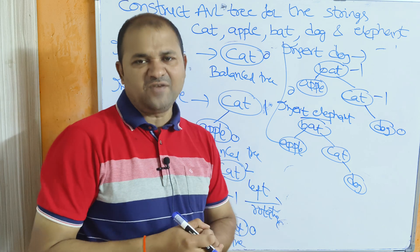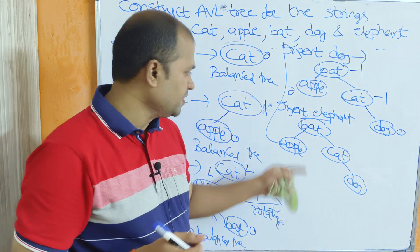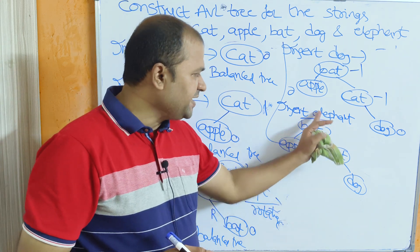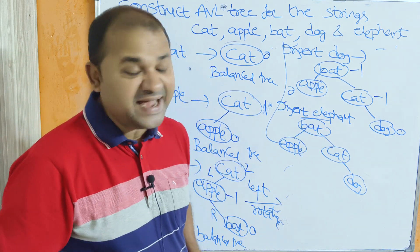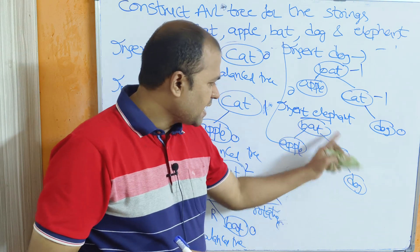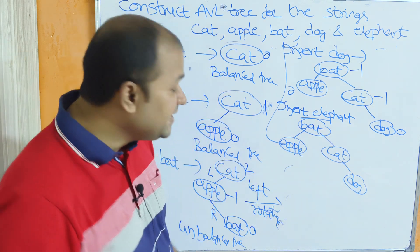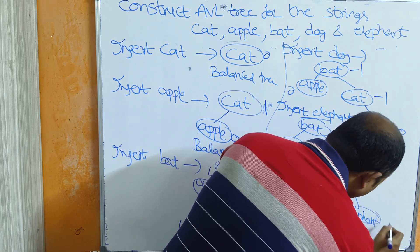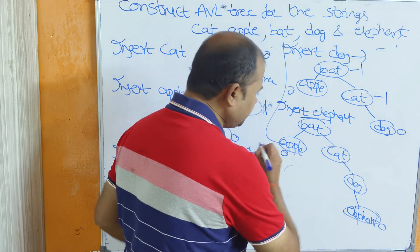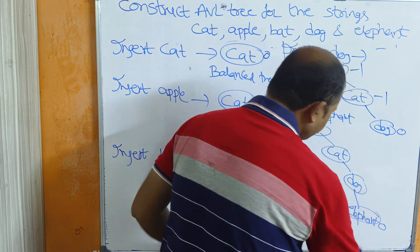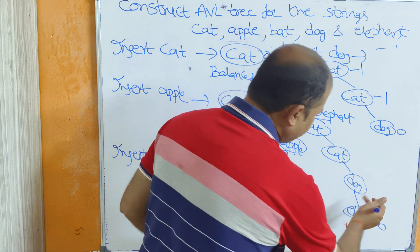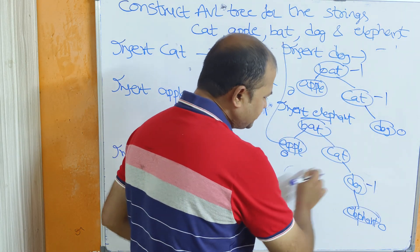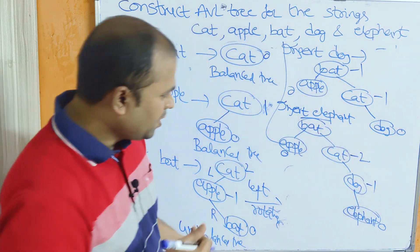Compare 'e' with 'b' — e is greater, go right. Compare 'e' with 'c' — e is greater, go right. Compare 'e' with 'd' — e is greater, so elephant is inserted as the right child of dog. For elephant the balance factor is 0. For apple it is 0. For dog: left subtree height is 0, right subtree height is 1, balance factor is -1. For cat: left subtree height is 0, right subtree height is 2, balance factor is -2.